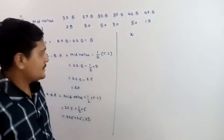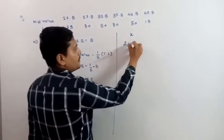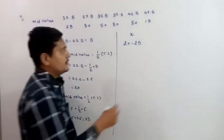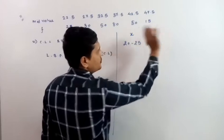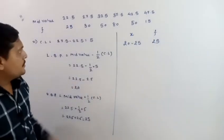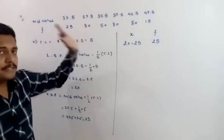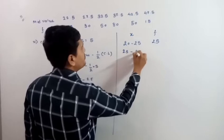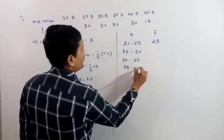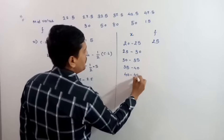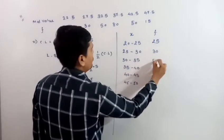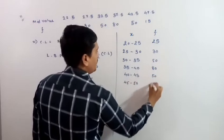So now we have both boundary points: the first class becomes 20 to 25, with frequency 25. Remember, the frequency stays as it is — as it is, no change. Only the mid value is replaced by the class. Similarly applying the same: 25 to 30, then 30 to 35, 35 to 40, 40 to 45, and 45 to 50. Frequencies remain as it is: 30, 50, 80, 50 and 15.